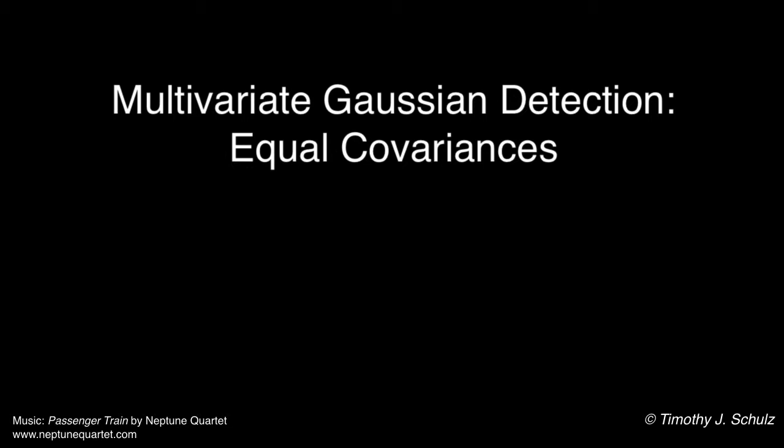In this lesson, we'll consider the multivariate Gaussian hypothesis tests for the special case when the covariance matrices are equal, and we'll show how to evaluate the corresponding receiver operating characteristic.